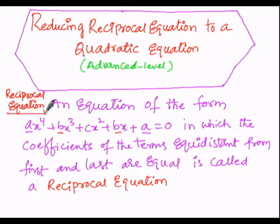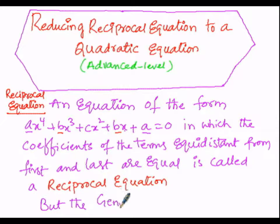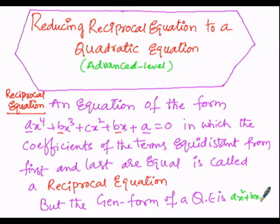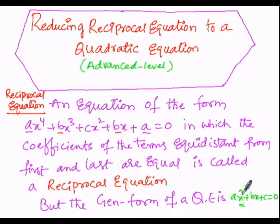The highest degree of this reciprocal equation is 4 (x⁴), whereas in a quadratic equation the degree is 2. The general form of a quadratic equation is ax² + bx + c = 0. In order to convert the given fourth-degree reciprocal equation into a second-degree quadratic form, we must divide the entire equation by x².